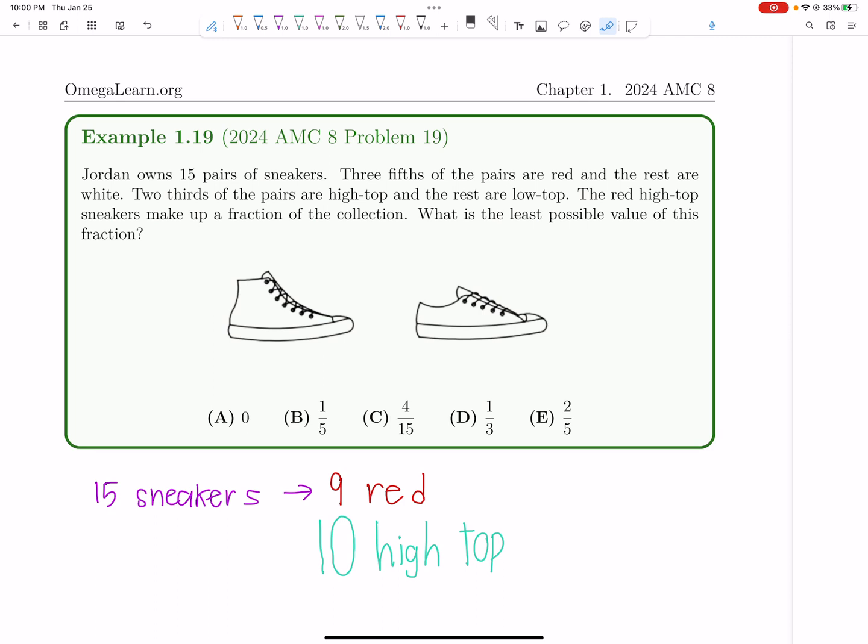Because the fraction is just the number that are both red and high-top, divided by 15. So if we want the smallest number of sneakers that are both red and high-top, what should we do?